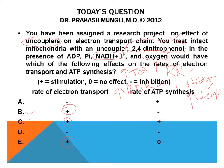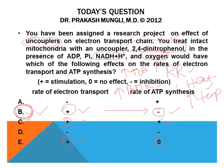Choice B shows a negative (decreased) rate of ATP synthesis — that looks correct. Option C shows ETC rate increased but also ATP synthesis increased, which is incorrect. Option E shows ETC rate increased but ATP synthesis as zero, which is also incorrect — it is decreased, not zero. Therefore, option B is the correct answer: uncouplers increase the electron transport chain rate but decrease overall ATP synthesis.